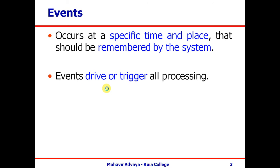This data needs storage, and we use databases for storing data. The database becomes our basic system where we store events in the form of information. Not all events will trigger processing in the database. Any event that doesn't create any processing within the system is not to be considered an event. Any event that does some processing but produces no output is still considered an event.